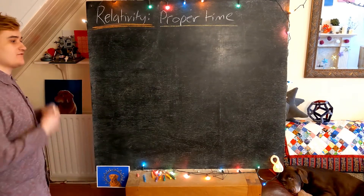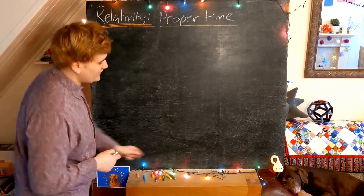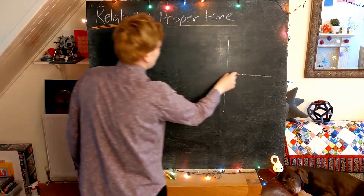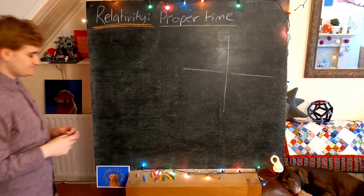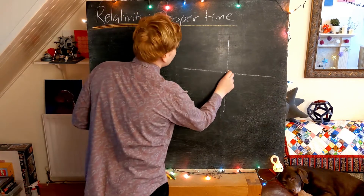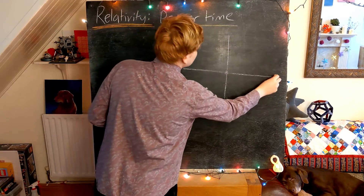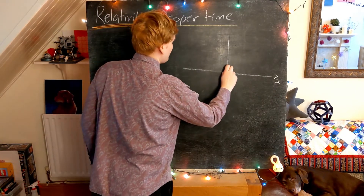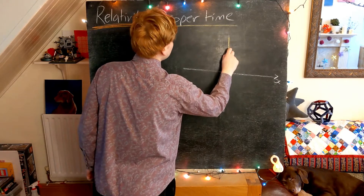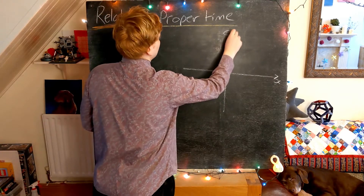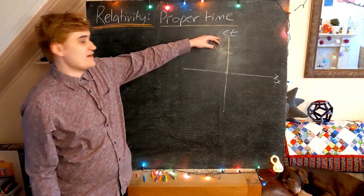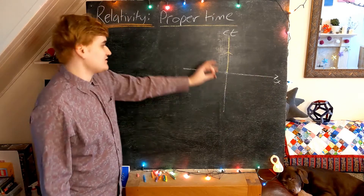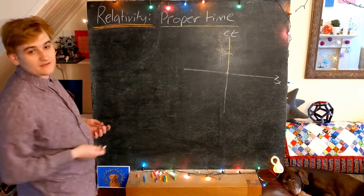I want to revisit the idea of proper time, which we essentially defined as the time that an observer measures within their own reference frame. Within your own reference frame, you sit at the origin of that frame and travel along a world line that traces out the time axis. In your own frame, you simply don't move through space — you just travel through time.